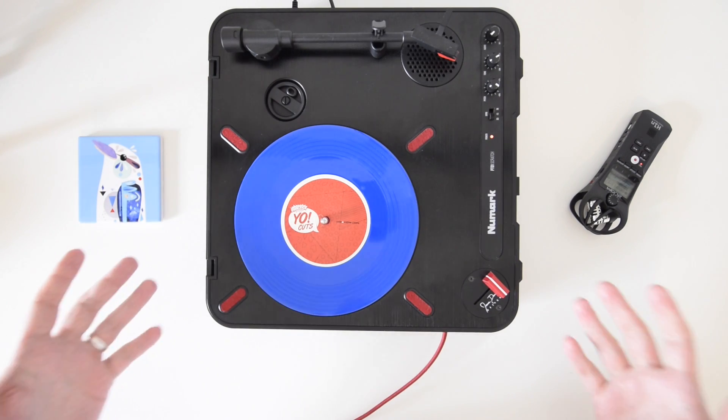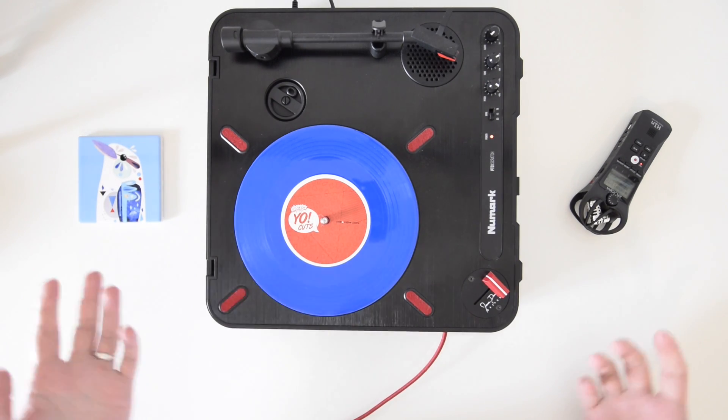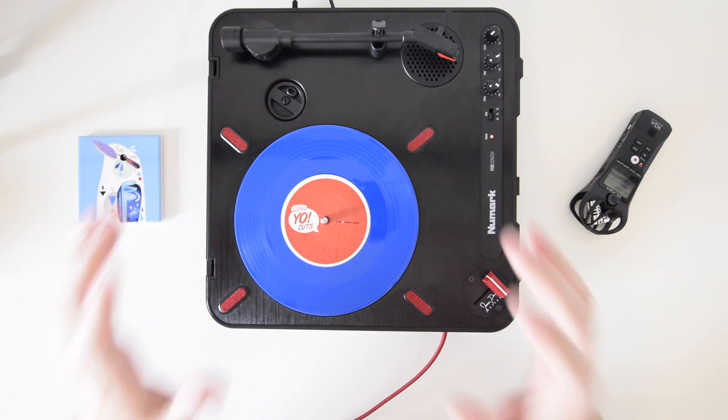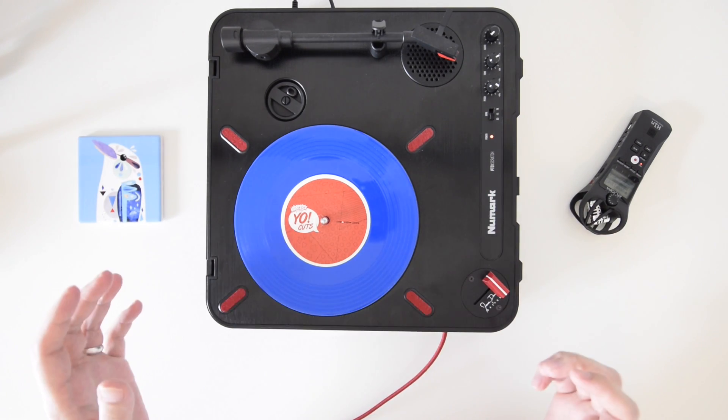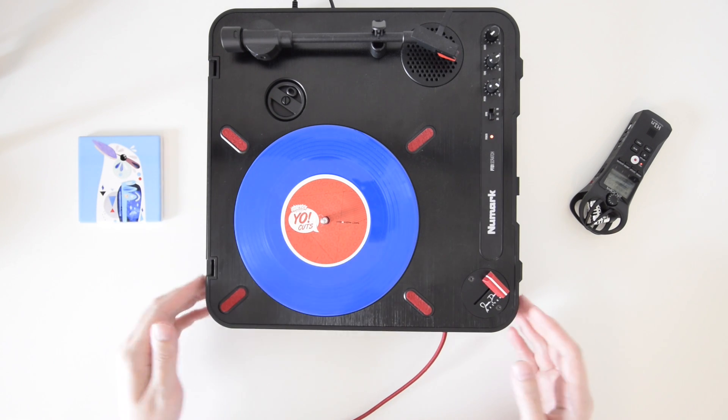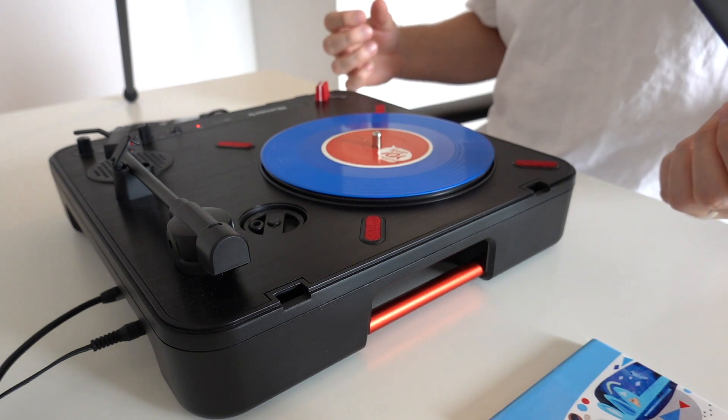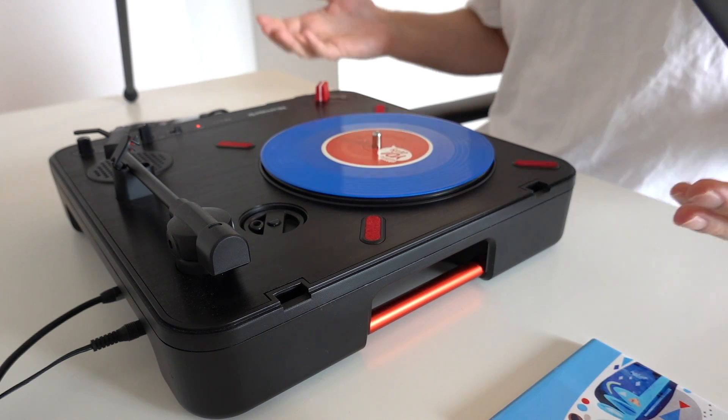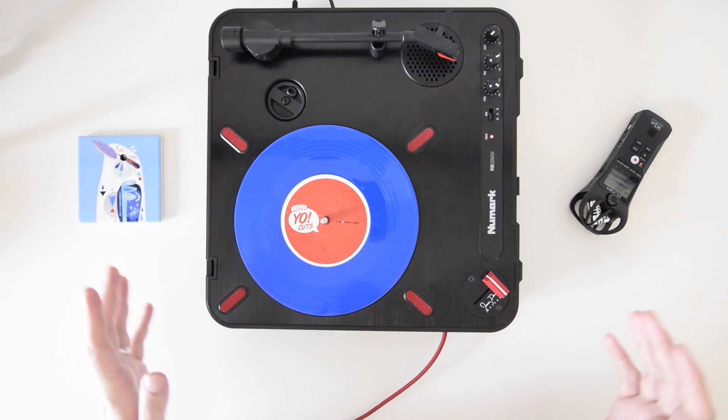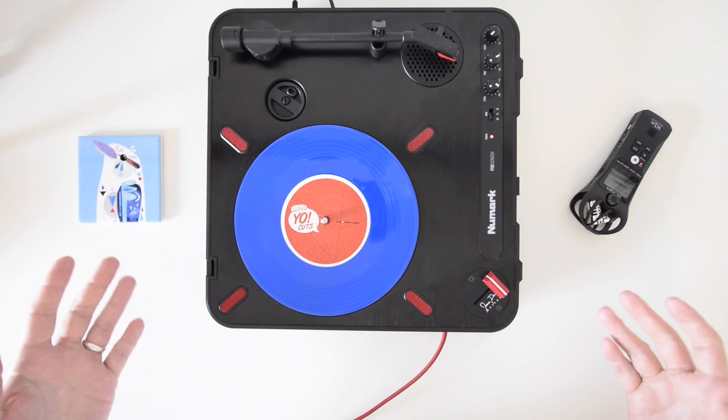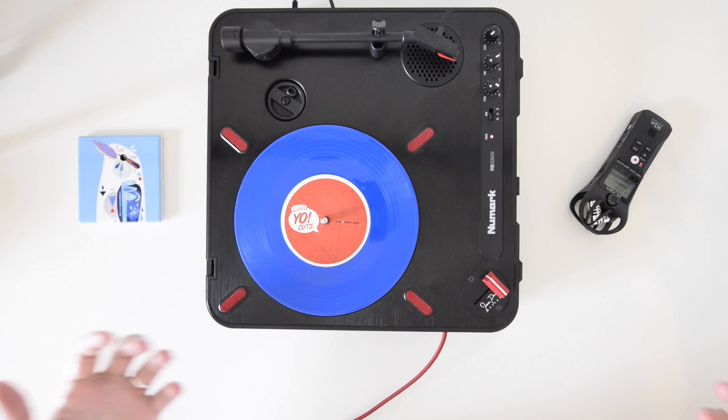Alright so the second piece of equipment you're gonna need if you want to get into scratching is of course some battle records or scratch records. Now people always ask me where do I get these records and my answer is always the same. There are a few places that I like to get them and I'll leave links in the description to where those places are but if you just google 7-inch battle records or 7-inch scratch records you'll come up with plenty of results.